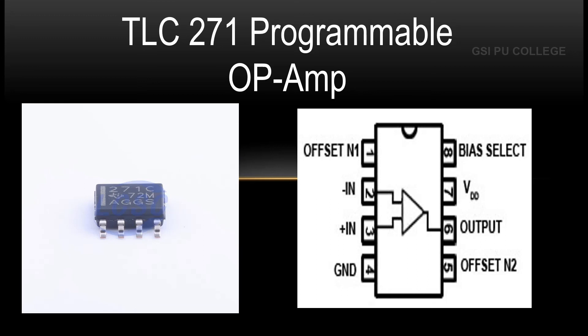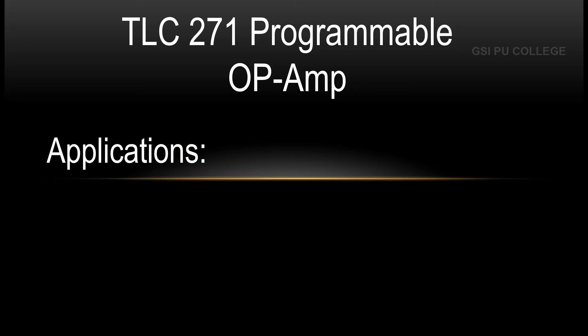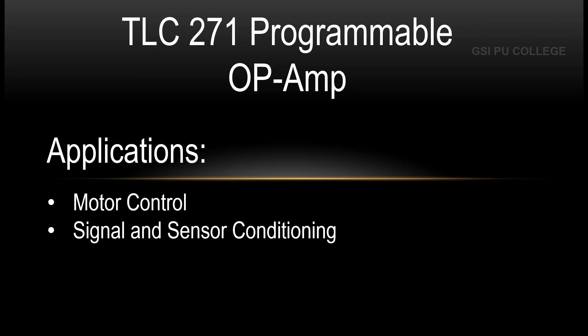This op-amp offers a range of programmable power consumption modes selected by the level of voltage applied to the bias select pin, which is the 8th pin. A programmable gain amplifier, or PGA, is an electronic amplifier — typically an op-amp — whose gain can be controlled by external digital or analog signals. The gain can be set from less than 1 volt to over 100 volts.